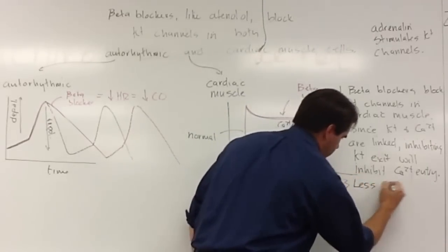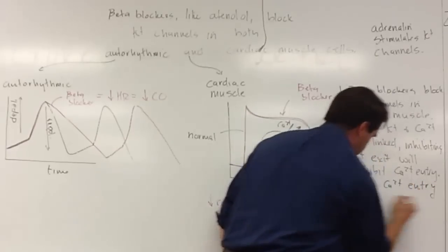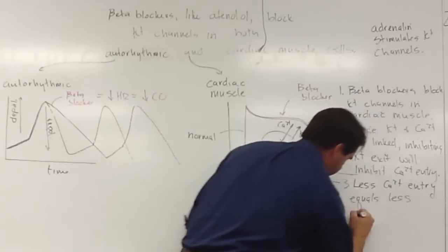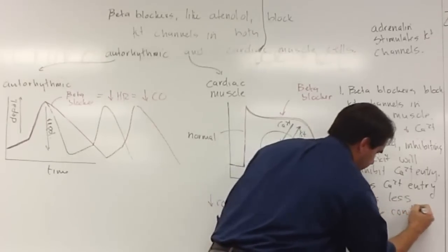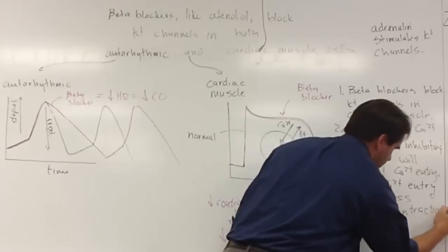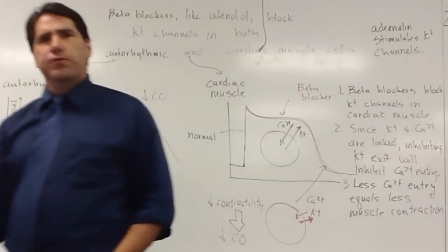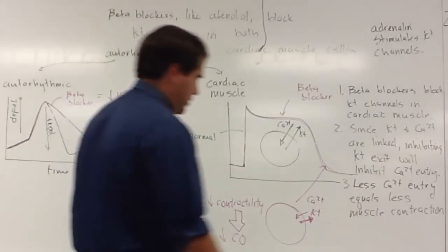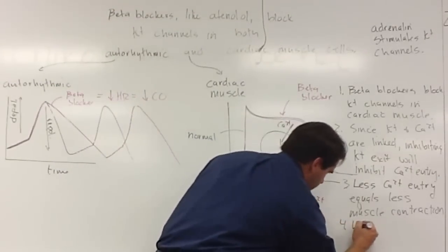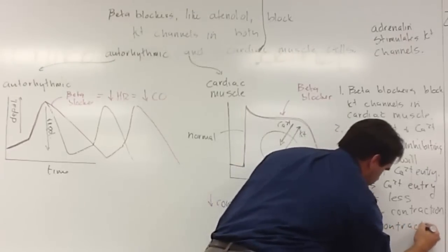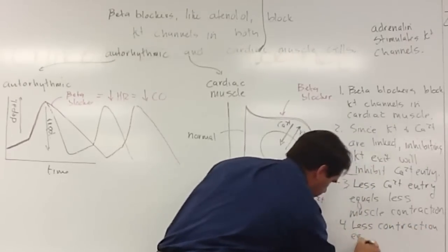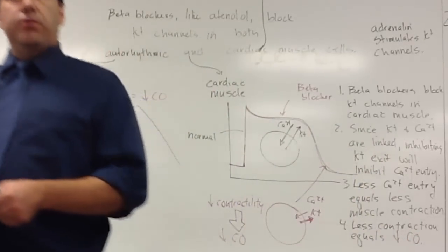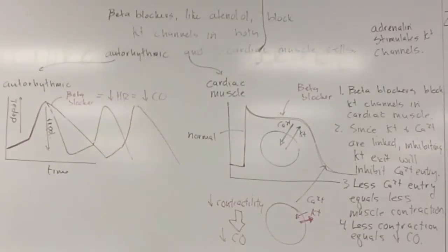Less calcium entry equals less muscle contraction. There's kind of a big step in there, but less calcium to bind to troponin and move tropomyosin out of the way so actin and myosin can interact. Less contraction equals increased cardiac. I'm always alright with arrows just to shorten up what you're saying.